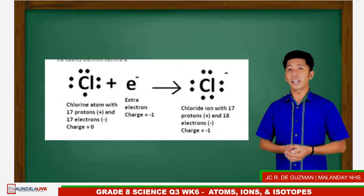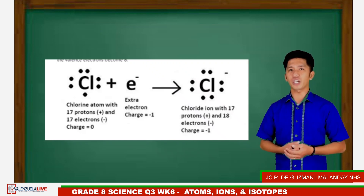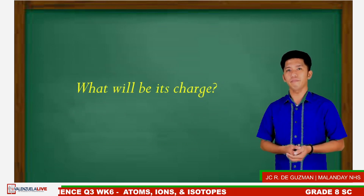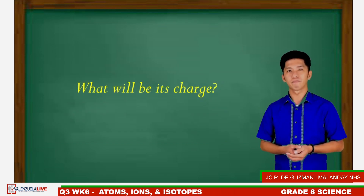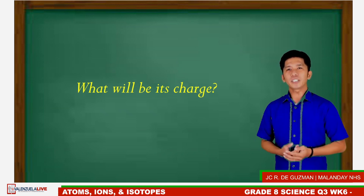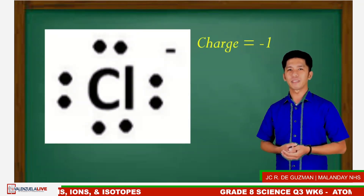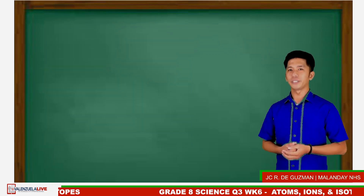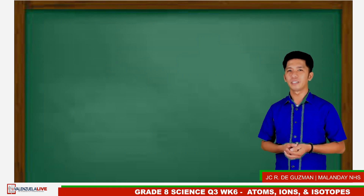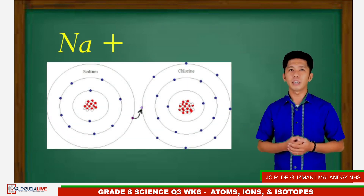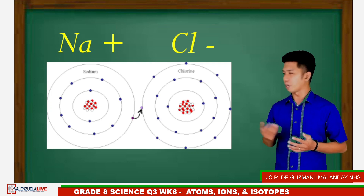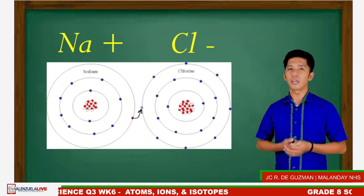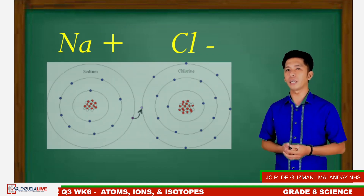Chlorine already gained an electron and is now a charged atom. The answer is negative 1 because it receives one negatively charged particle, or what we call the electron. The removed electron in sodium and the received electron by chlorine is an example of a stable compound known as sodium chloride, NaCl, also known as table salt.